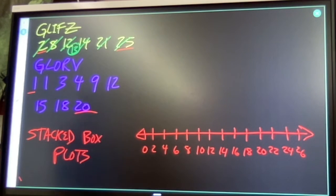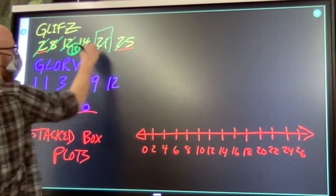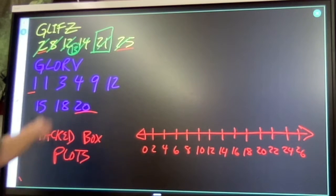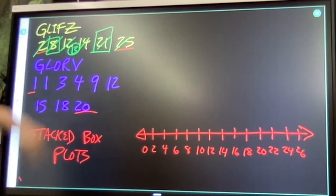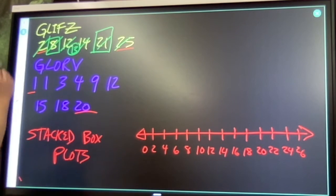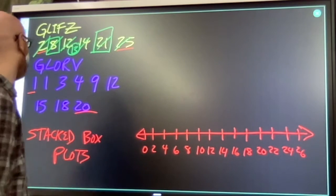Then, you also need to find the quartile marks. That would be, take my upper set, cut it in half. That's going to happen right here. Take my lower set, cut it in half. That's going to happen right there. And, you need your minimum and your maximum. So, 2, 8, 13, 21, 25 for glyphs.